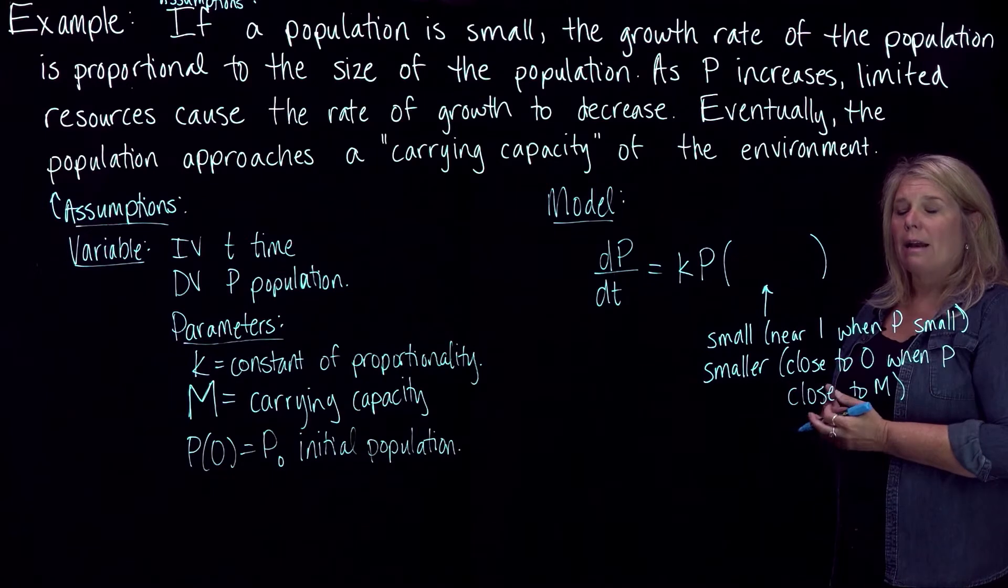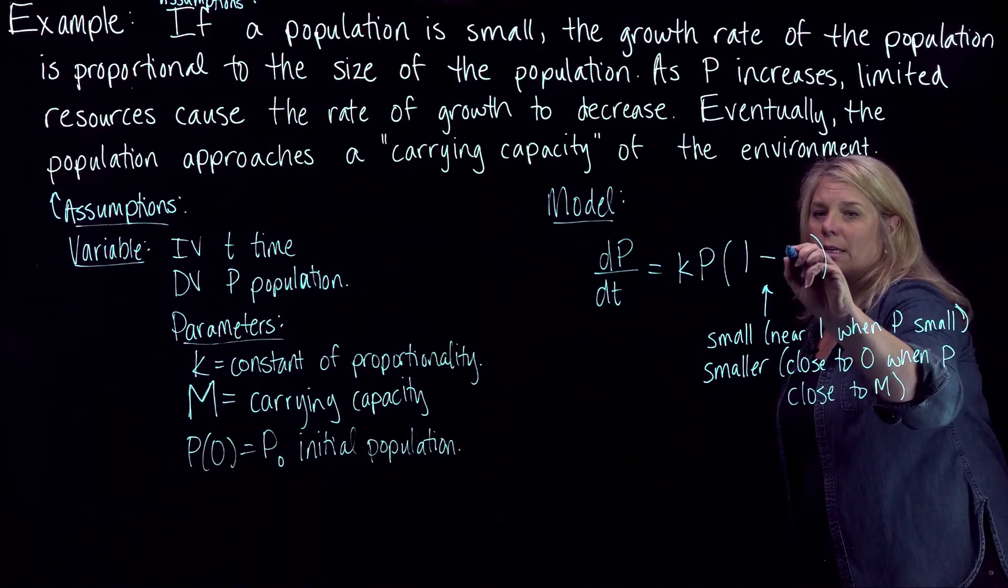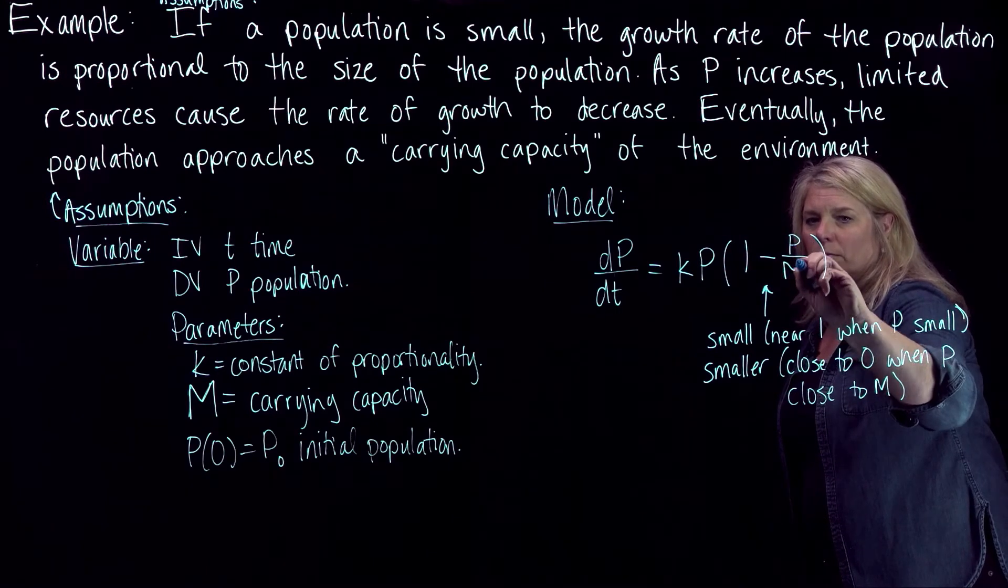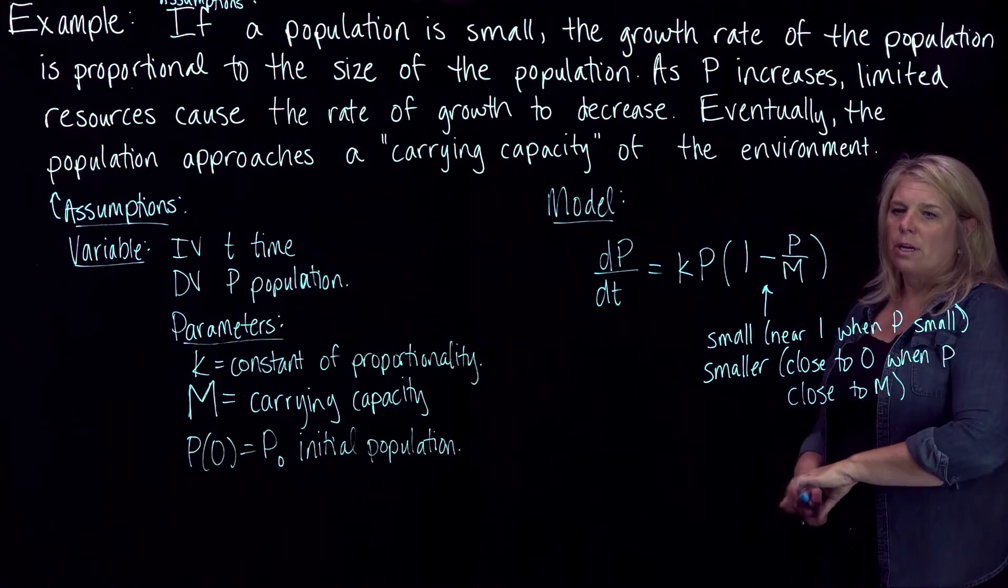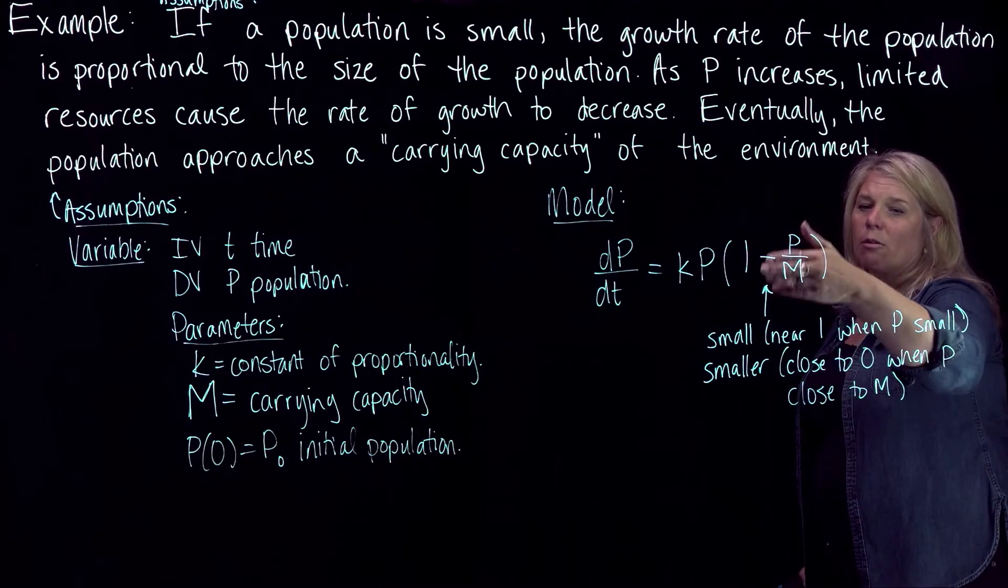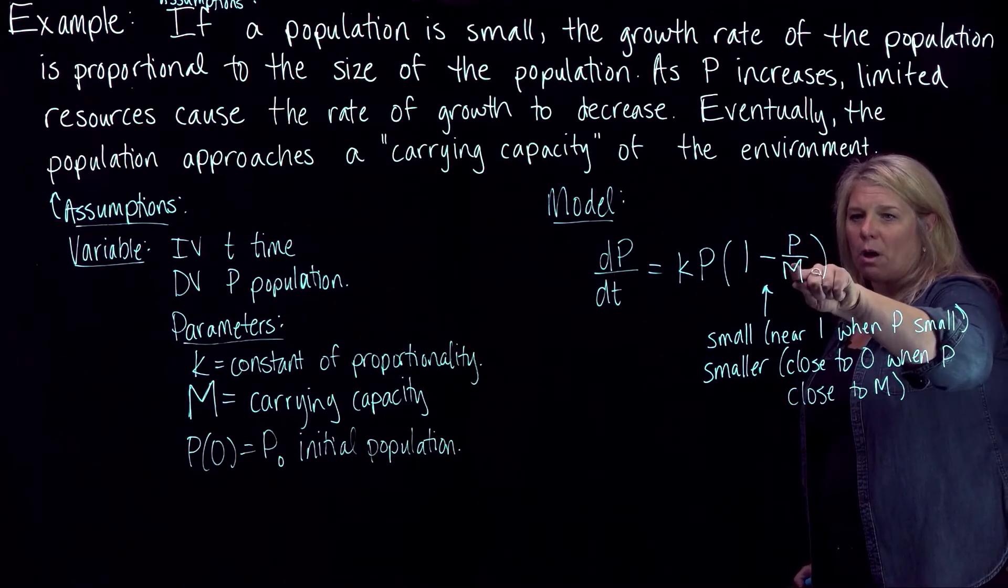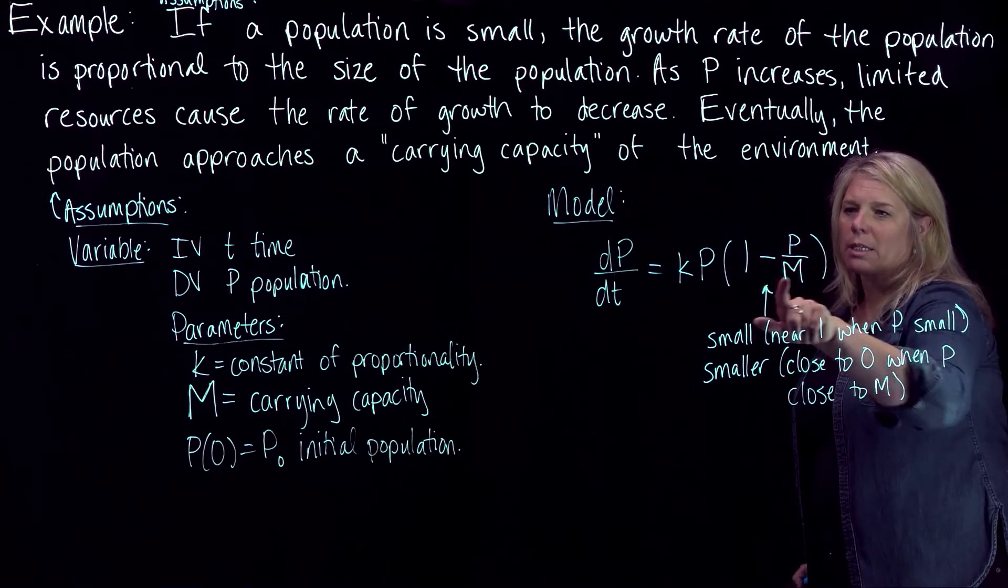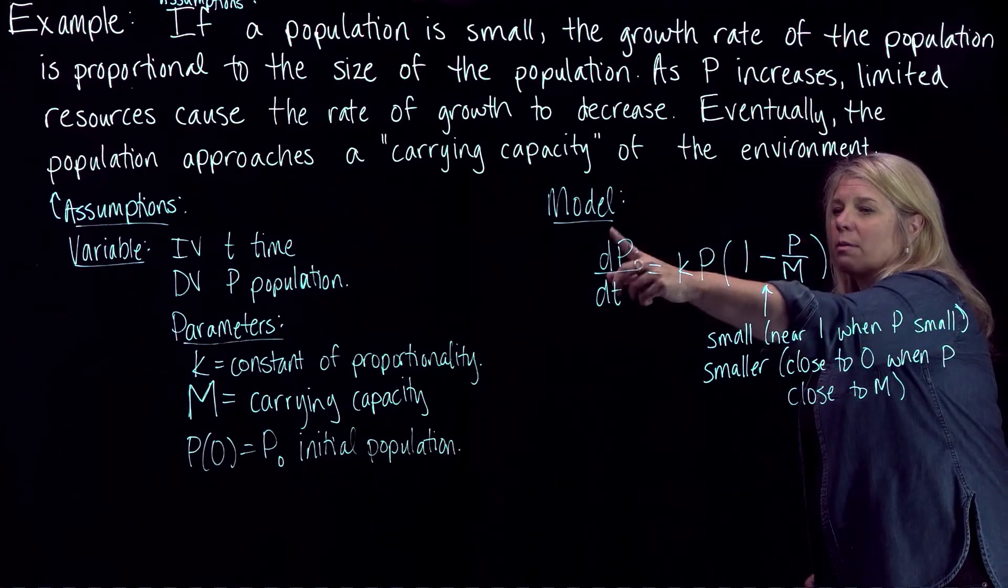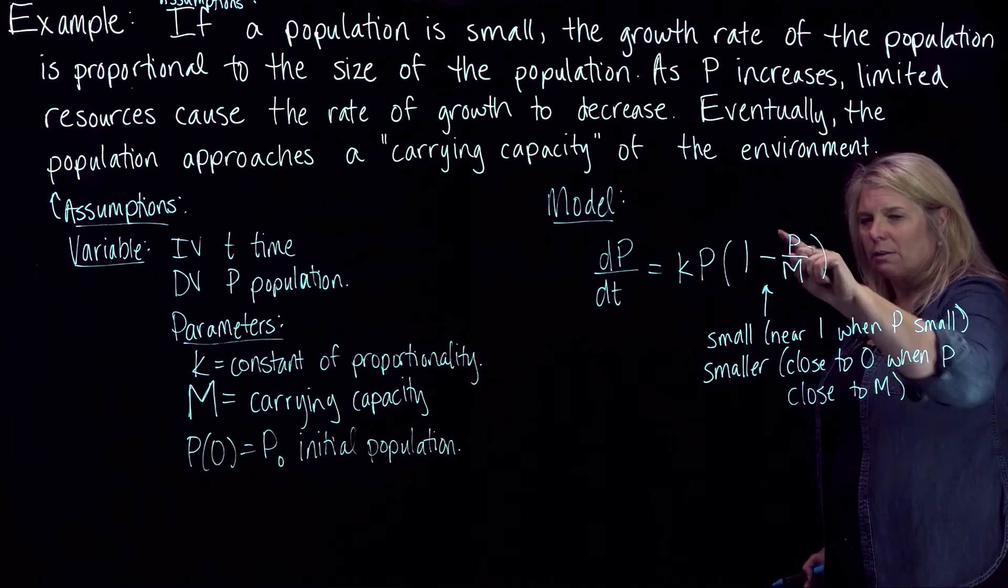So we can do that in a couple of different ways, but one way that we can do that is to use this factor here. So when P is less than M, in fact when P is 0 or when P is a lot less than M, this fraction will be very small and this factor will be approximately 1. So when P is small, the rate of growth of the population is pretty much equal to kP minus this little factor here.